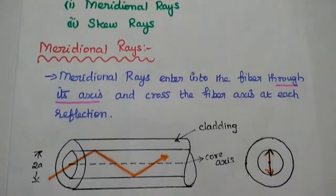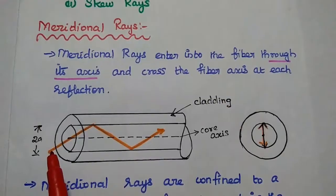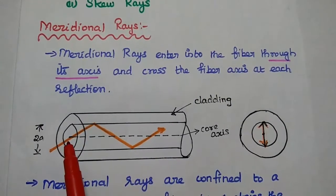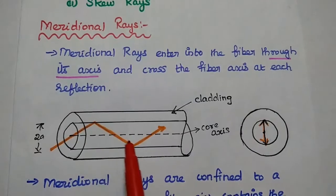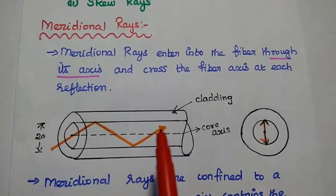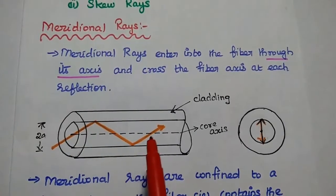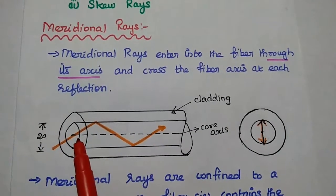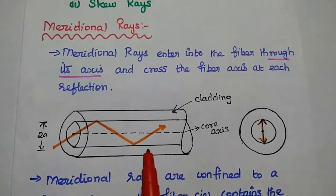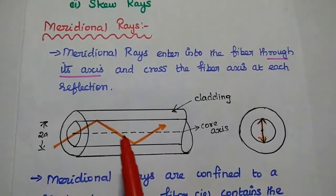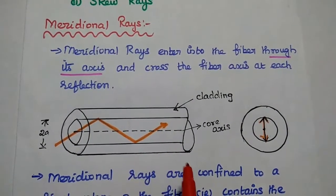The first one is meridional rays. Meridional rays enter into the fiber through its axis, that is the core axis, and cross the fiber axis at each reflection. It is confined to a single plane — the plane which contains the fiber axis. So here it is easy to track the path of meridional rays, so it can be widely used.